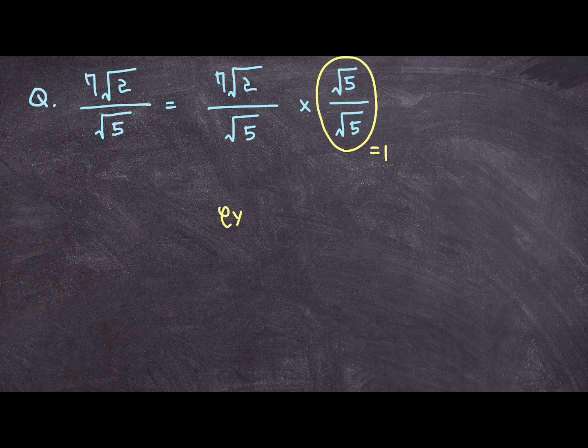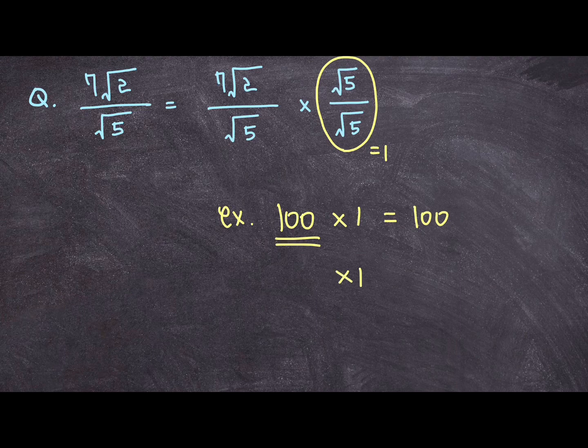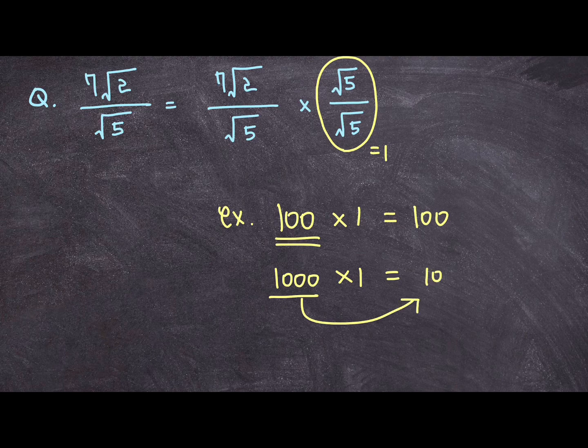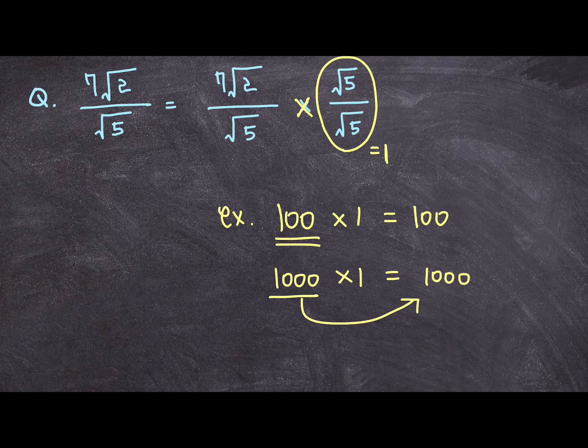For example, if you are multiplying 1 to original value of a hundred, the value stays as a hundred. If you multiply 1 to 1,000, the value stays as 1,000. The value does not change. So multiplying 1 or square root of 5 over square root of 5 will not change the original value, but it will help you get rid of that radical sign from the denominator of this whole fraction.